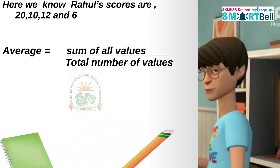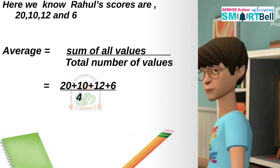Average means sum of all values divided by the total number of values. In order to get the sum of values, we have to add all four scores of Rahul: 20 plus 10 plus 12 plus 6. Then we divide this total score by the number of values. How many numbers are here? Yes, 4. That is 48 divided by 4, which is equal to 12.